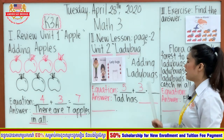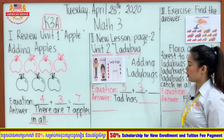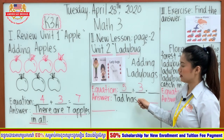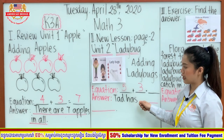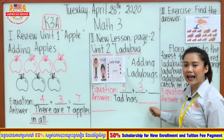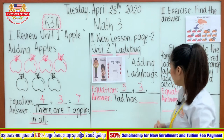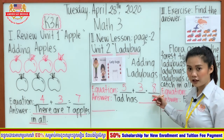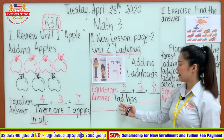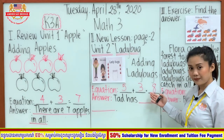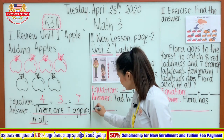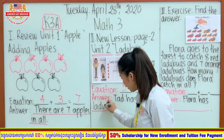Can you help teacher find the correct equation and answer? Let's count all these ladybugs: 1, 2, 3, 4, 5, 6, 7, 8 ladybugs. Write number 8 in here. Here's our answer: Tad has 8 ladybugs.